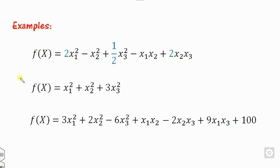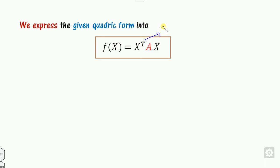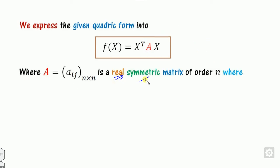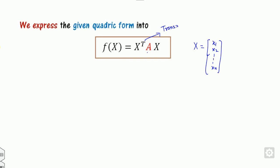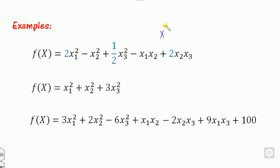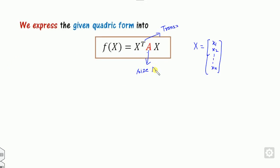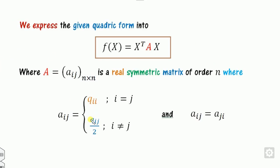We can express any of these quadratic functions in the form X^T A X, where capital T represents the transpose, capital X is the vector (x1, x2, ..., xn) of dimension n, and capital A is a real symmetric matrix. Our task is to represent the function as X^T A X. The key question is: what is the size of this matrix A? The size of A equals the number of variables — for example, a 3-variable problem gives a 3×3 matrix A.